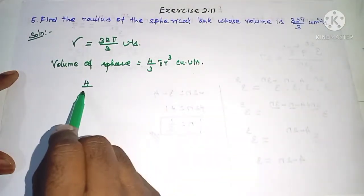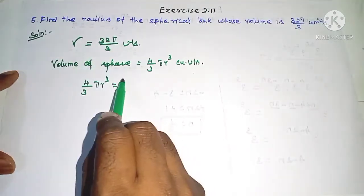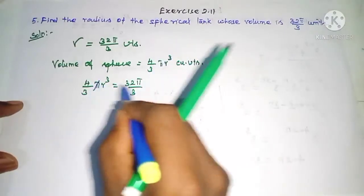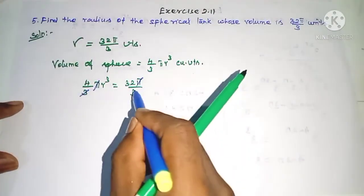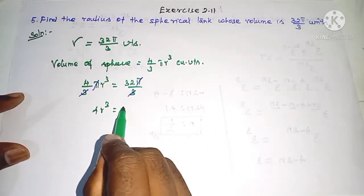So 4/3 πr³ is equal to the total volume 32π/3. So π will cancel, 3 will cancel. Finally we get 4r³ is equal to 32.